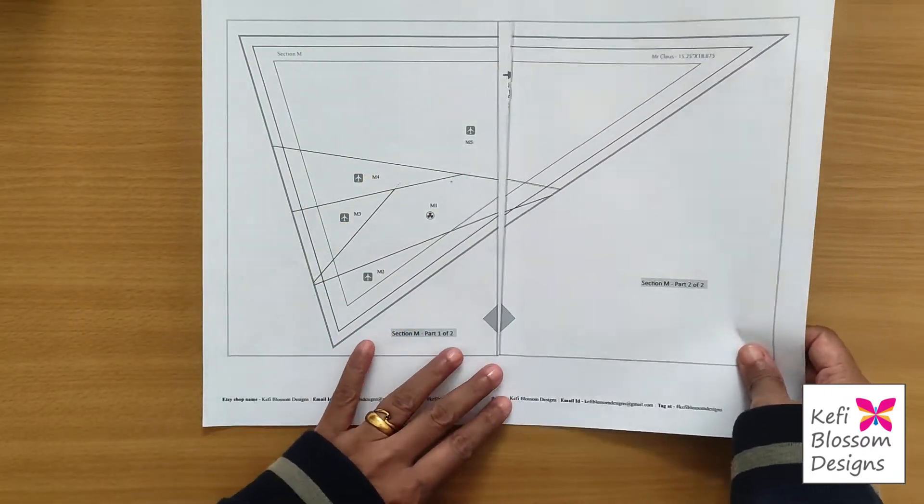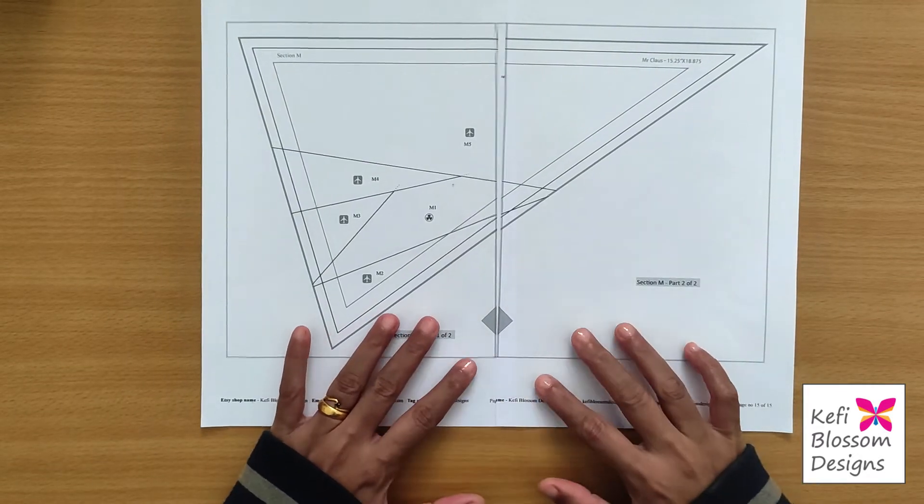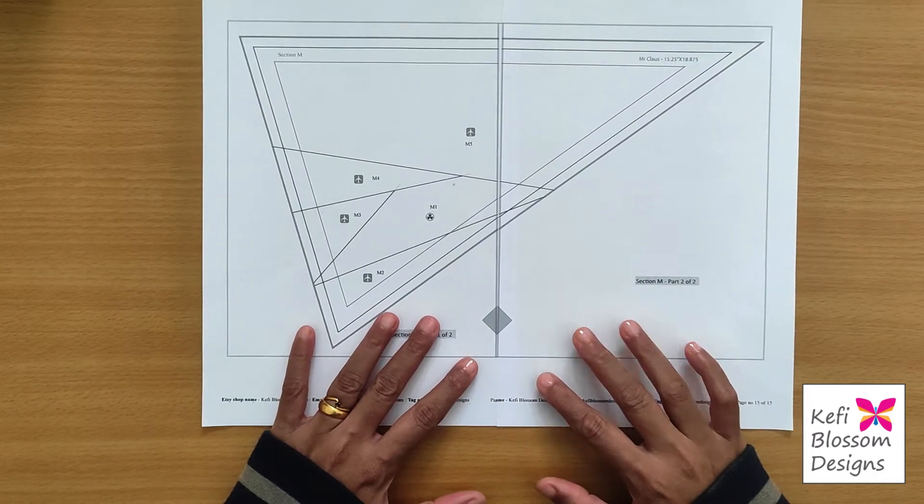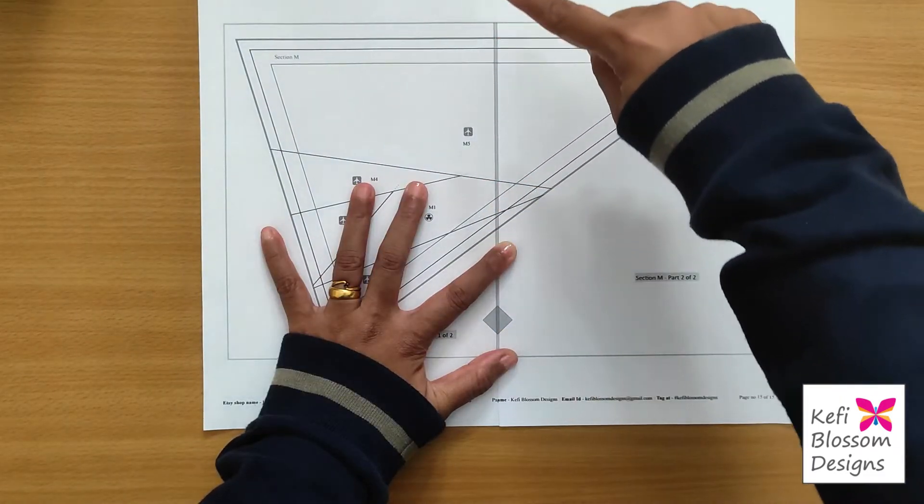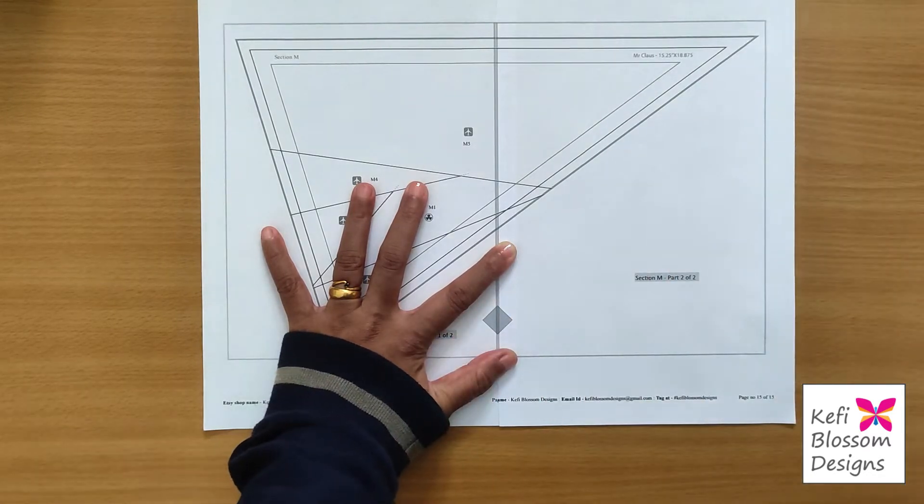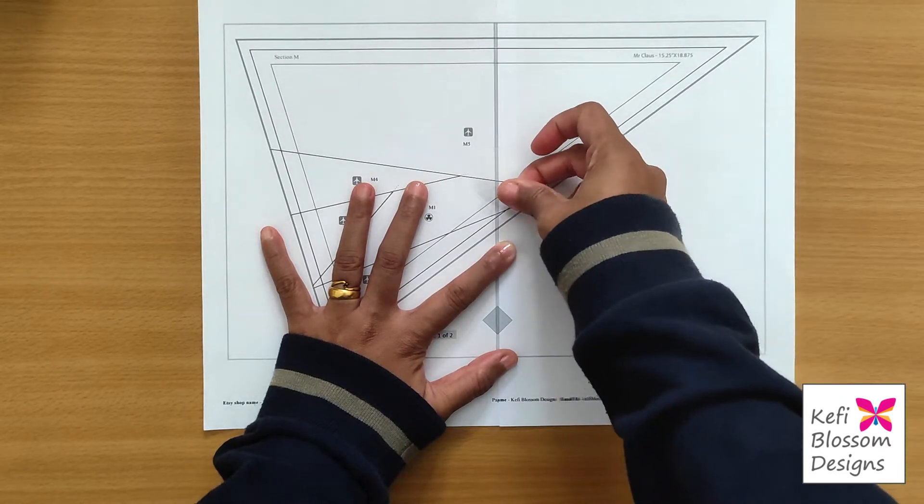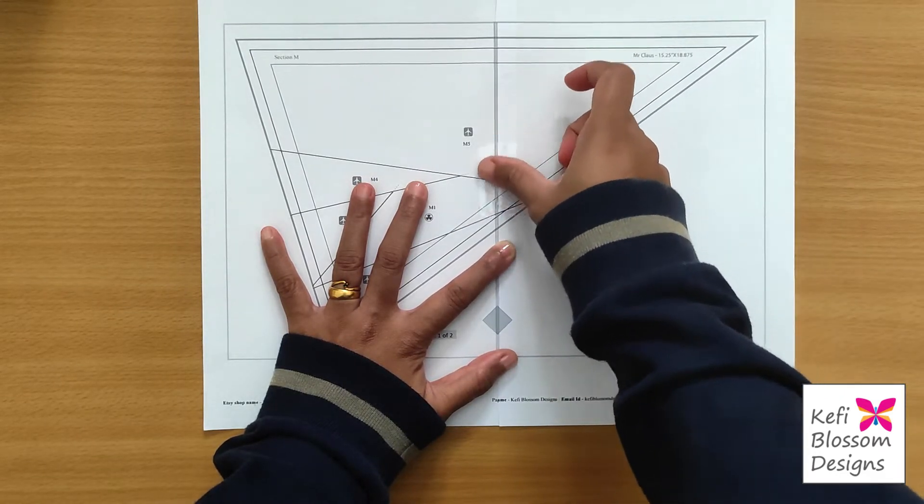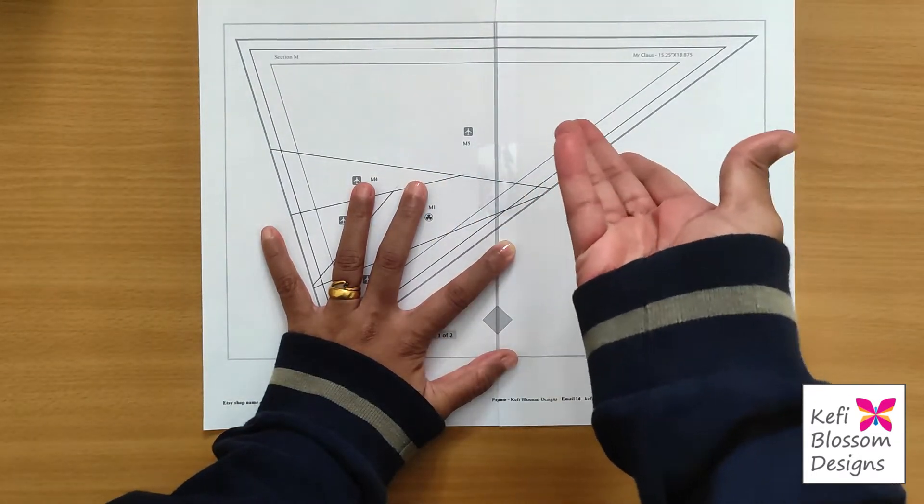You can just keep it like this and start joining the points, but I prefer to do it one point at a time. So you can start with the triangle if you want, or you can start from the top. So once you're okay with the arrangement, keep one hand in place. And then with the other hand, pull out a bit of cello tape and just place it at one spot.